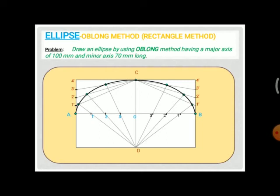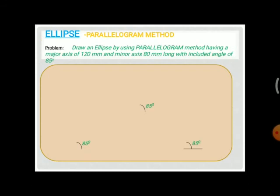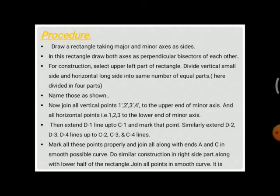Draw a curve connecting these three points from C to B, completing the upper half of the ellipse — a semi-ellipse. Then apply the same method to the other two quarters: the BD and DA sides, using the same division and intersection procedure.